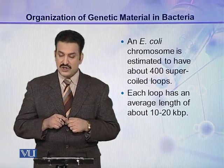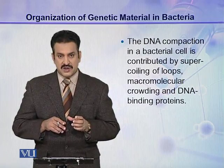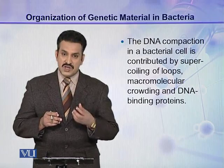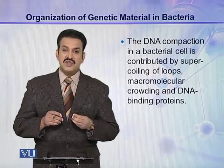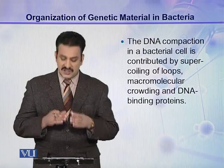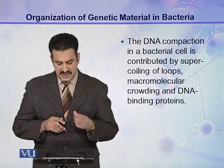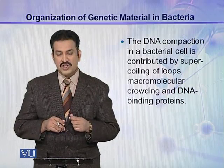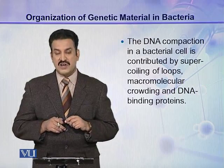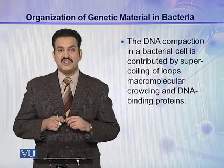DNA compaction is not only achieved by supercoiling. Mainly three factors are involved in making DNA compact and packing it in the bacterial cell: first is the supercoiling of loops, second is macromolecular crowding, and the third is DNA binding proteins, which have a special role to play in the compaction of DNA in a bacterial cell.